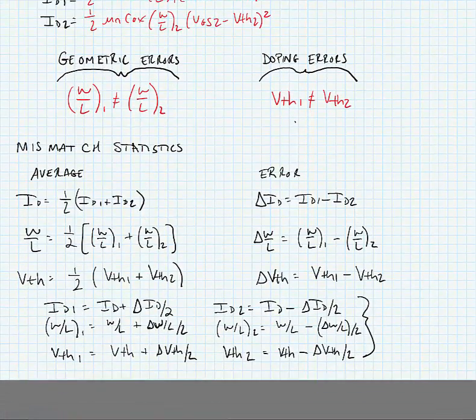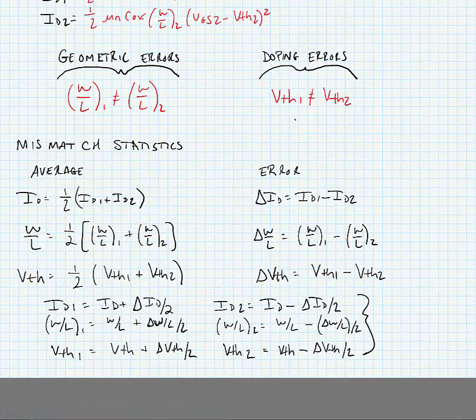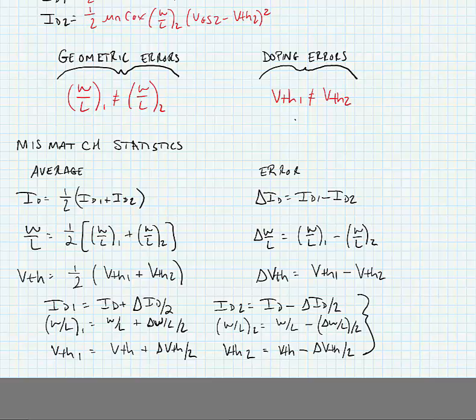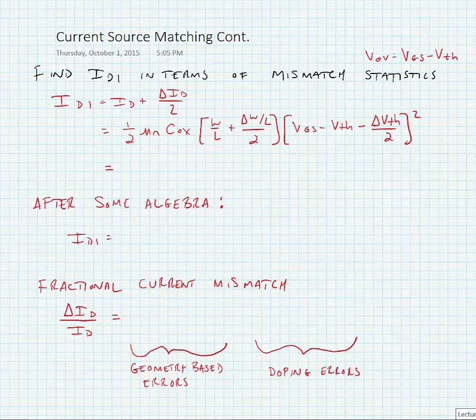So we're going to define a few mismatch statistics. We are going to define averages and errors, as averages are one-half the sum of these two currents and errors are the difference of the two currents. And if we rearrange those, we can write each of the currents, geometries, and threshold voltages in terms of the average and error.